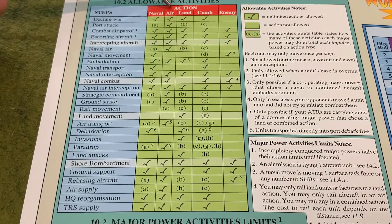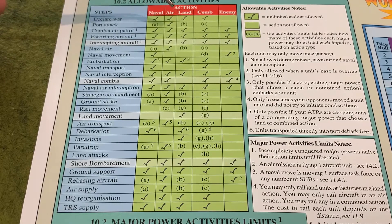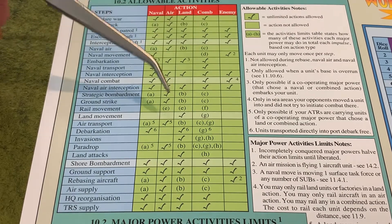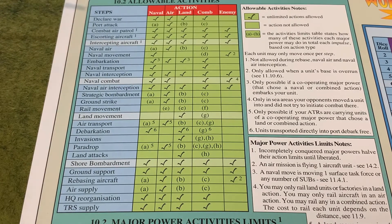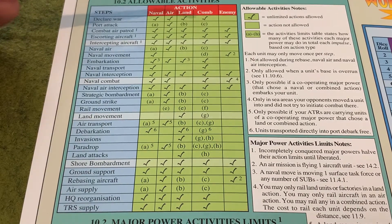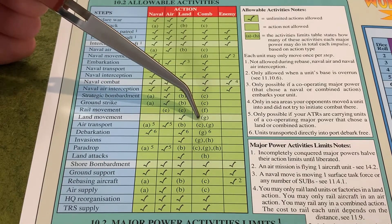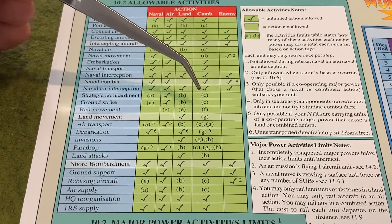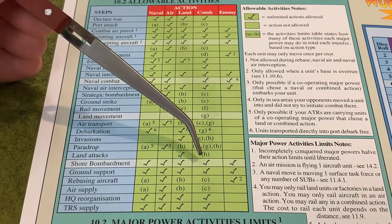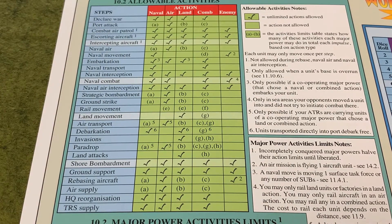If you do an air action, you'll have basically unlimited air activity but will be restricted in naval and land activity. A land action is good for when you have a lot of land units you want to move or fight with. The combined action allows you to do a little bit of everything — some naval movement, some rail movement, some land movement, ground strikes, strategic bombardment, and even some land attacks. The combined is good for situations where you need to do a little bit of everything but don't necessarily need to do a lot of anything.